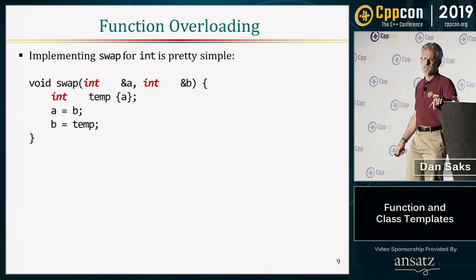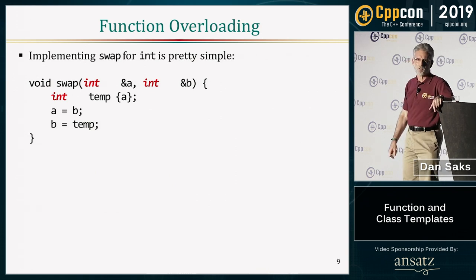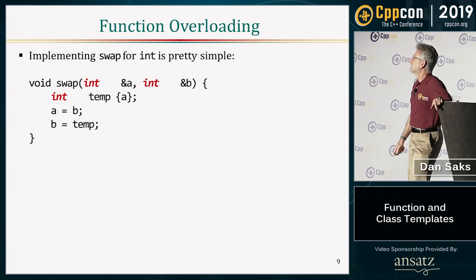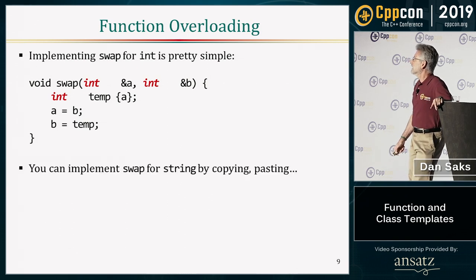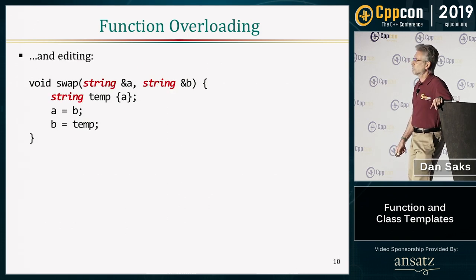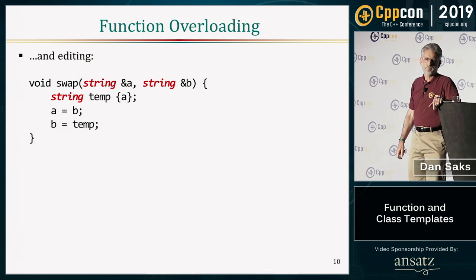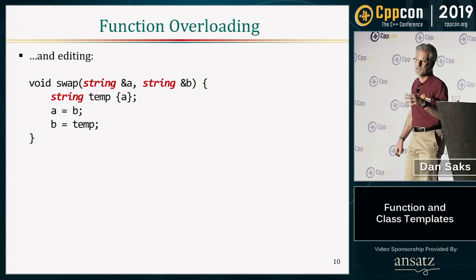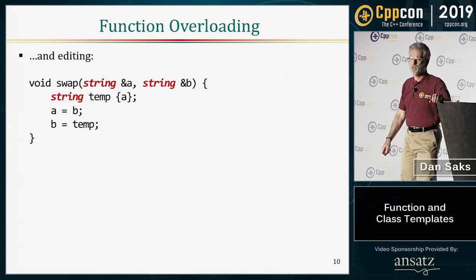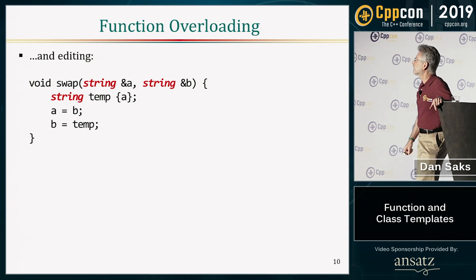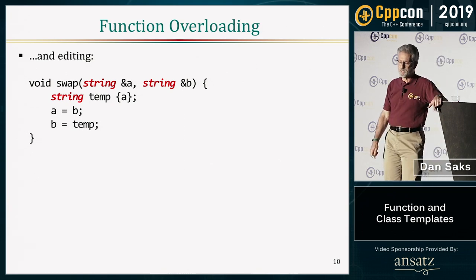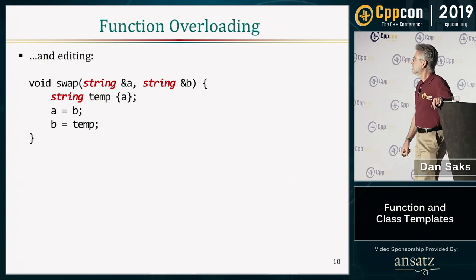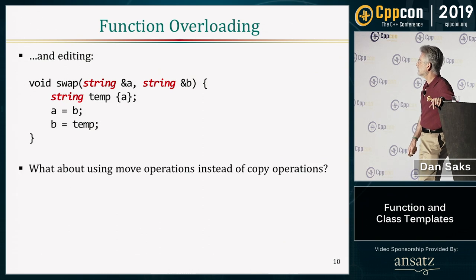When you look at the function definitions, most of us could crank something like this out pretty quickly. There's the version for int and for string — you produce it by copying, pasting, and editing. After you've done this a couple of times you say, okay, there's got to be a better way. For a straightforward function like this your odds of making a severe editing mistake are pretty small, but the larger the function, the greater your chance of making a mistake. So we would like an automated way to do it.